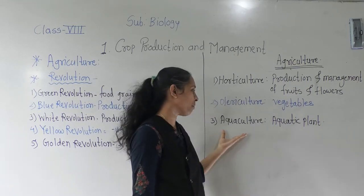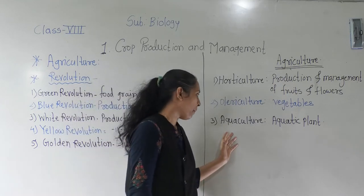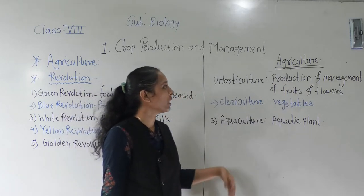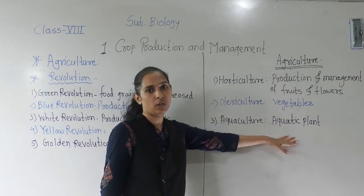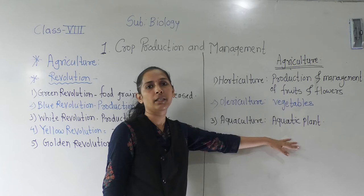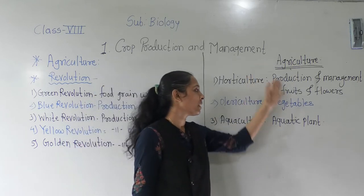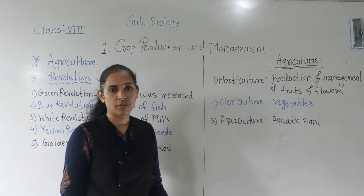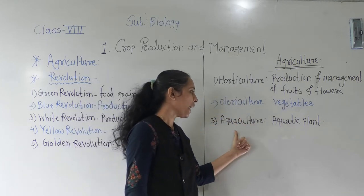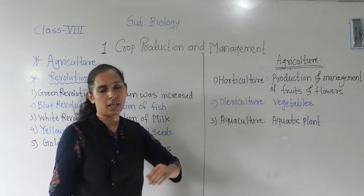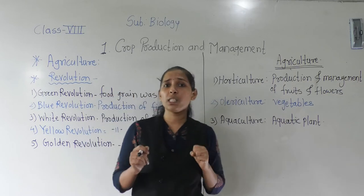The next branch is Aquaculture. Aquaculture is the branch of agriculture that deals with the production and management of aquatic plants — how to improve the quality of aquatic plants and how to get different types of products from aquatic plants. So these are the branches of agriculture: Horticulture, Olericulture, and Aquaculture.